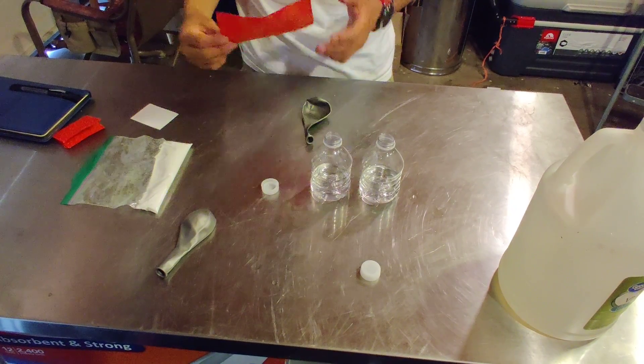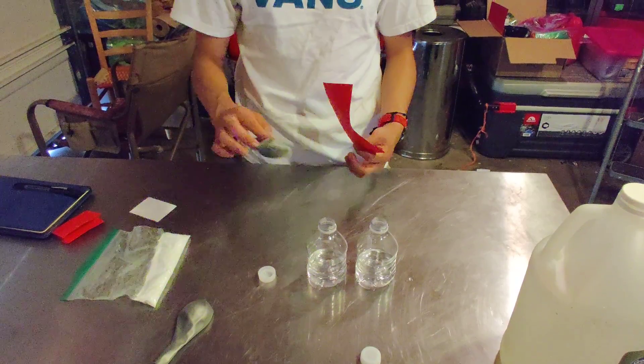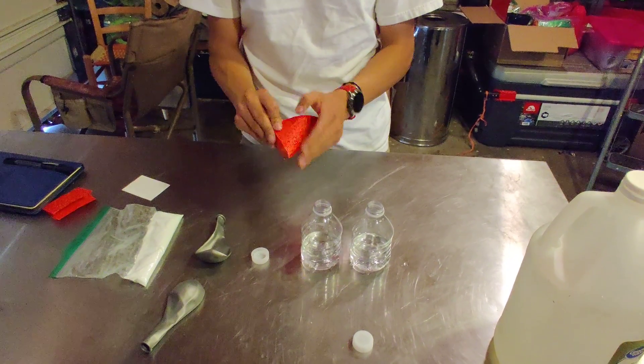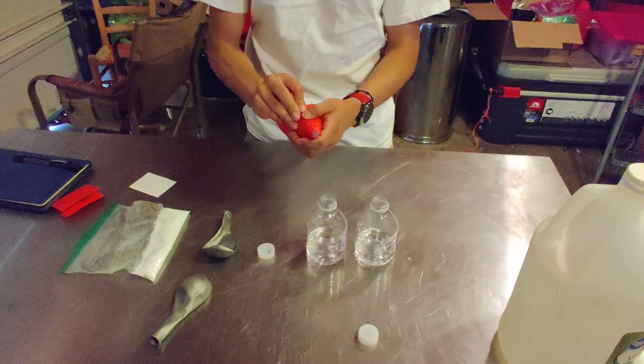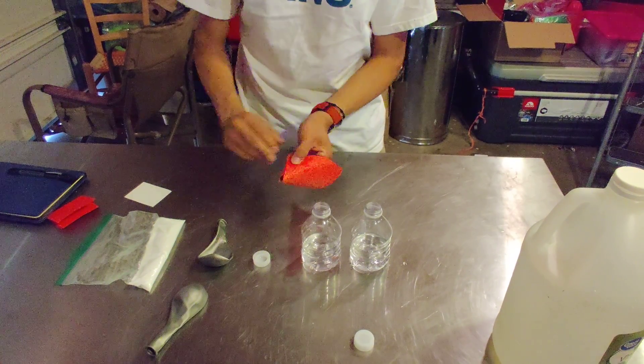So first things first, we need to make the funnel so we can pour the baking soda in our balloons. So let's make the funnel first. You guys will be using the same ones we used for the density experiment, right?